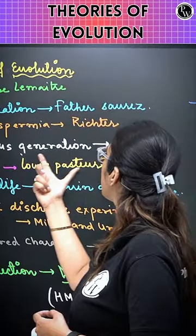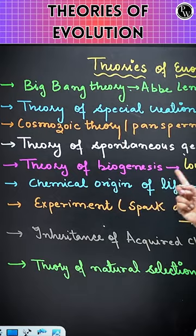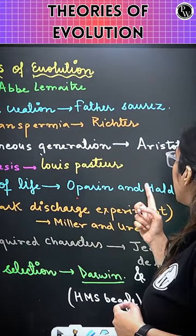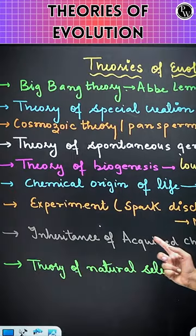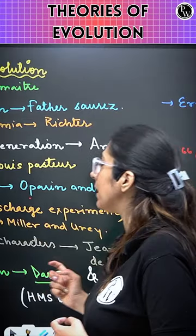Theory of Spontaneous Generation: Aristotle. Theory of Biogenesis: Louis Pasteur. Chemical Origin of Life: Oparin and Haldane. Experimental proof was given by Miller and Urey. Inheritance of Acquired Characters by Jean Baptiste de Lamarck.